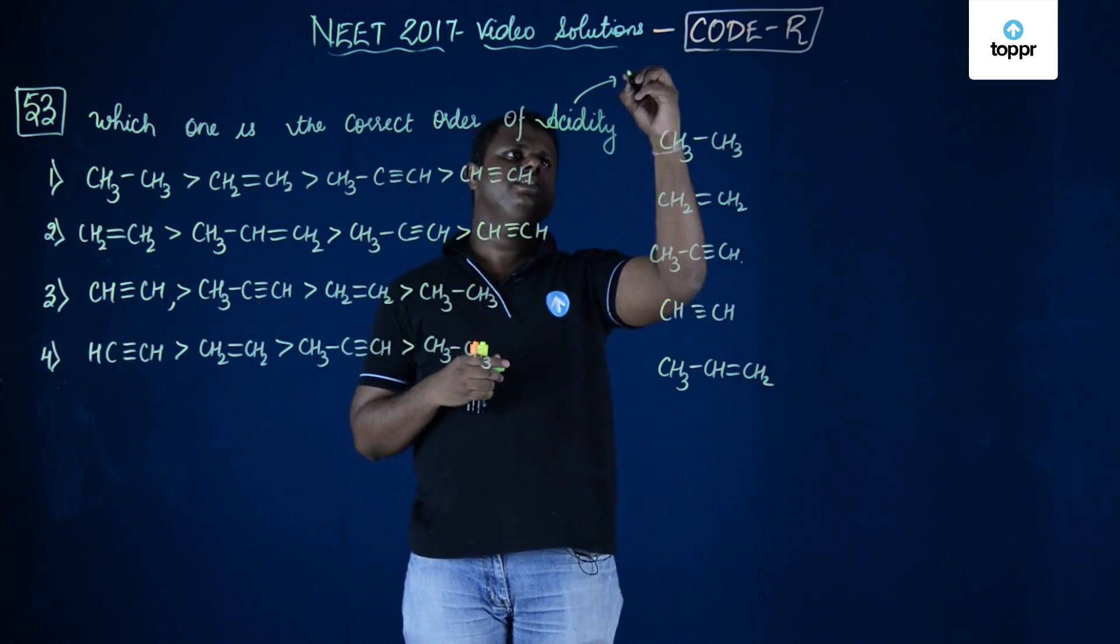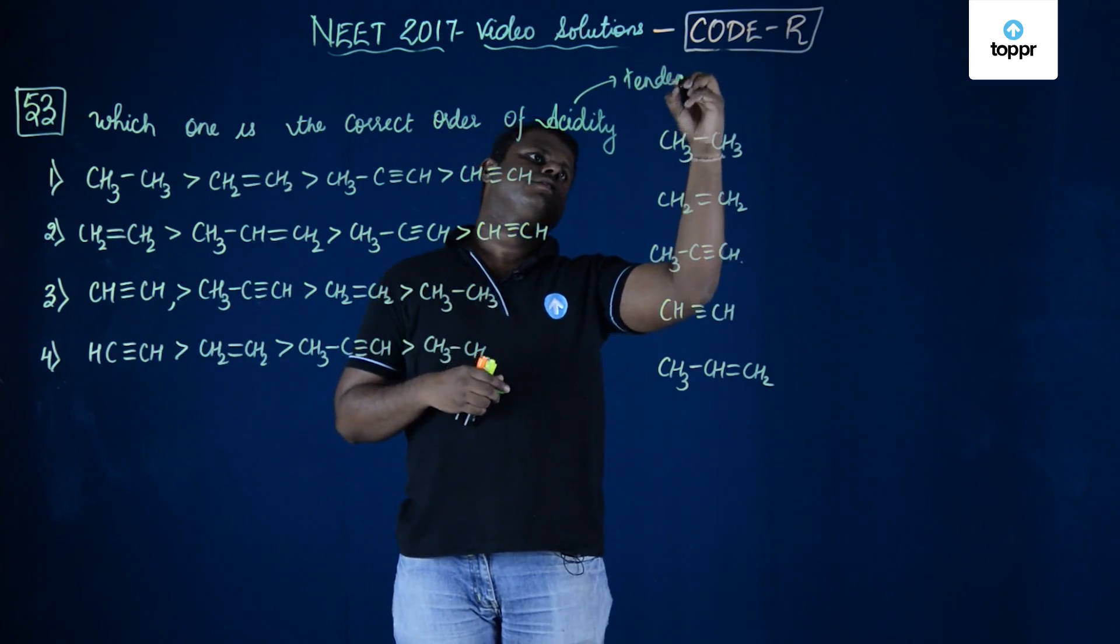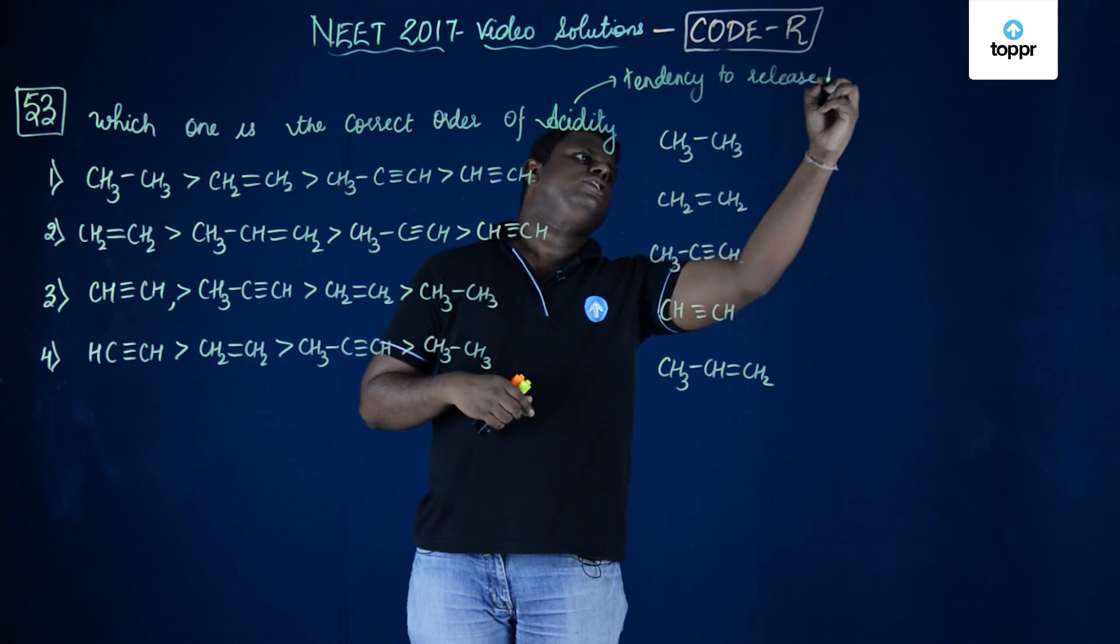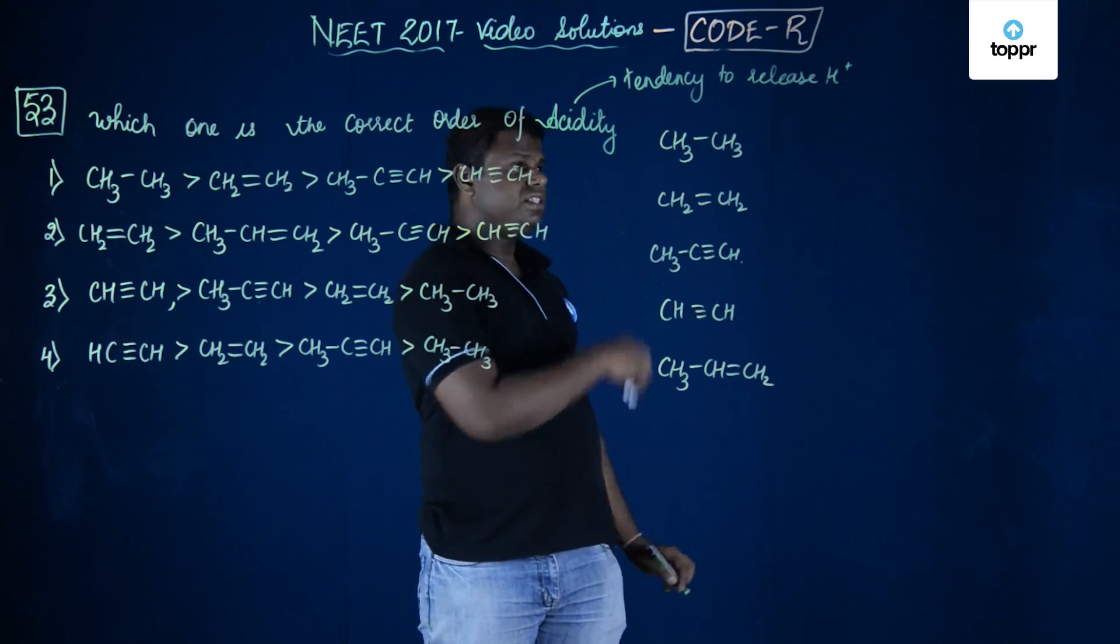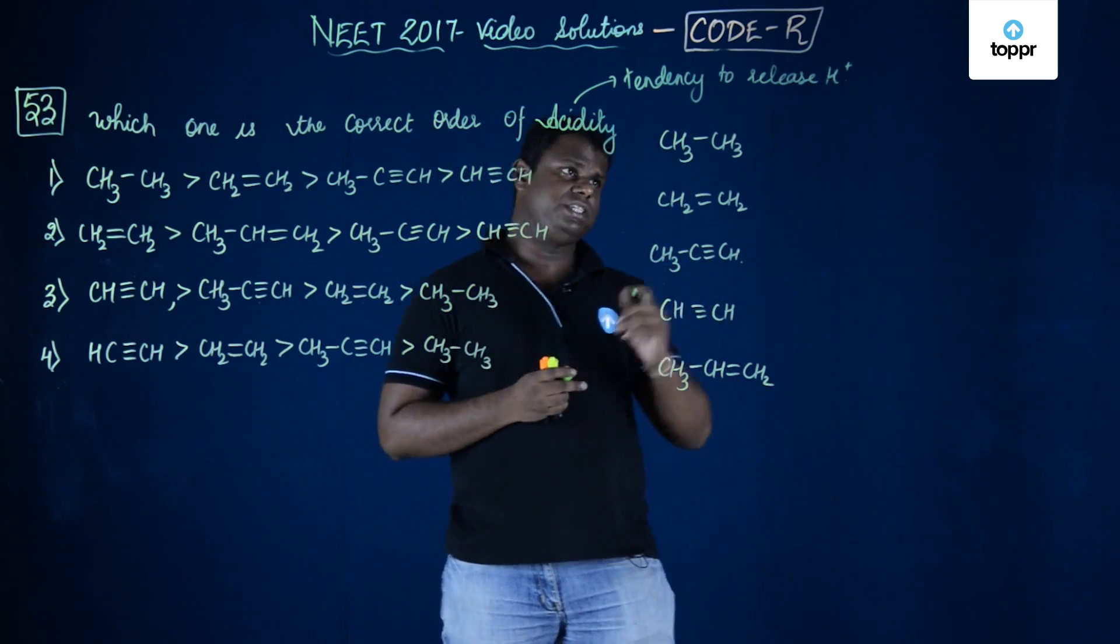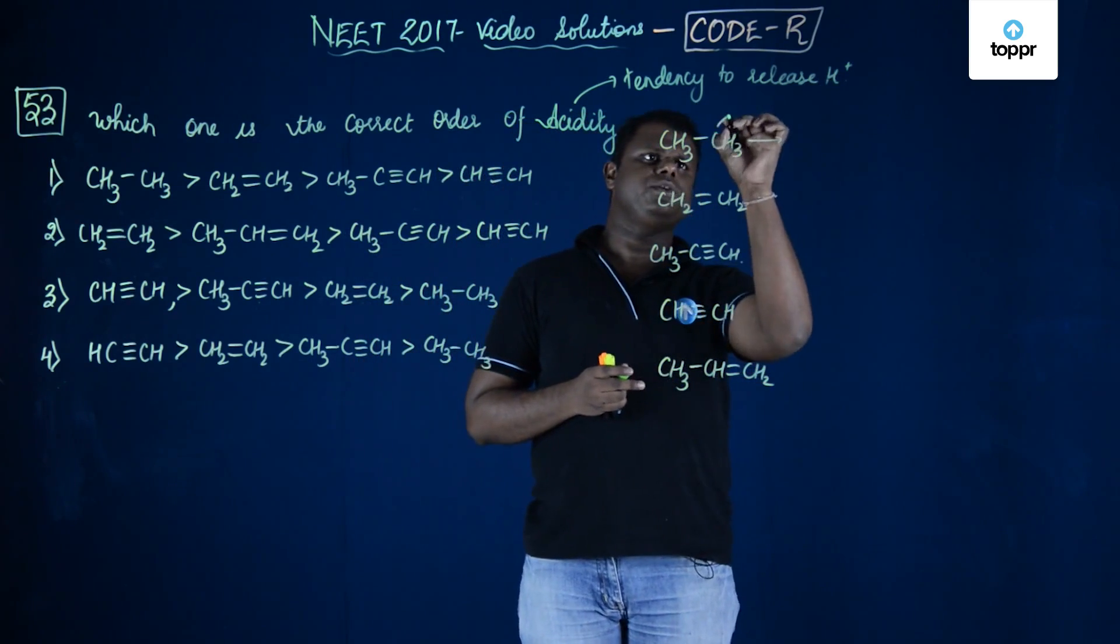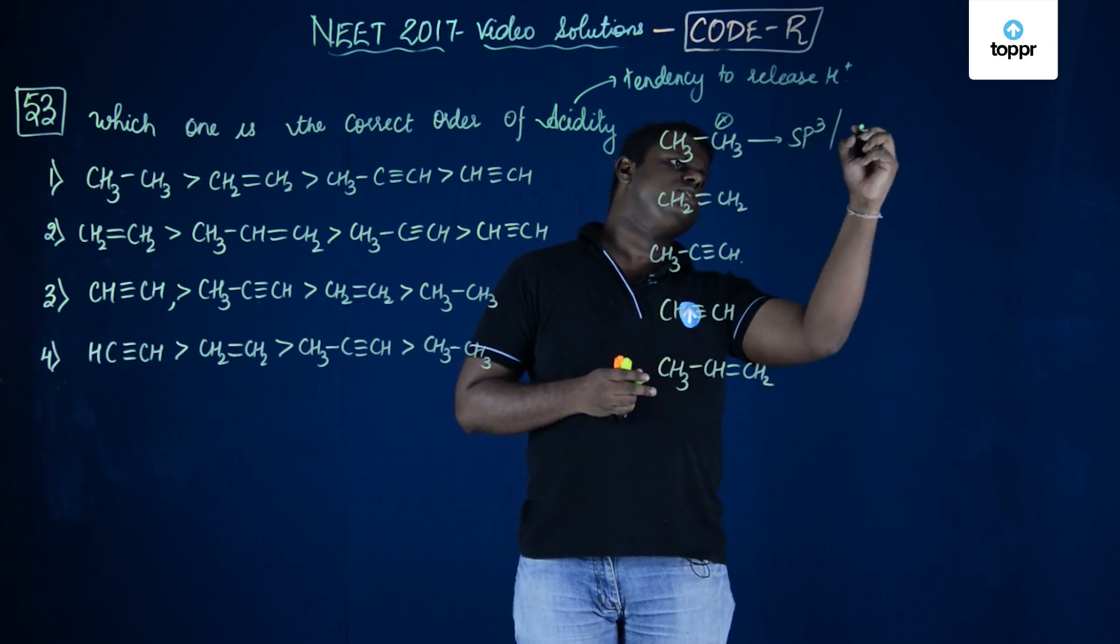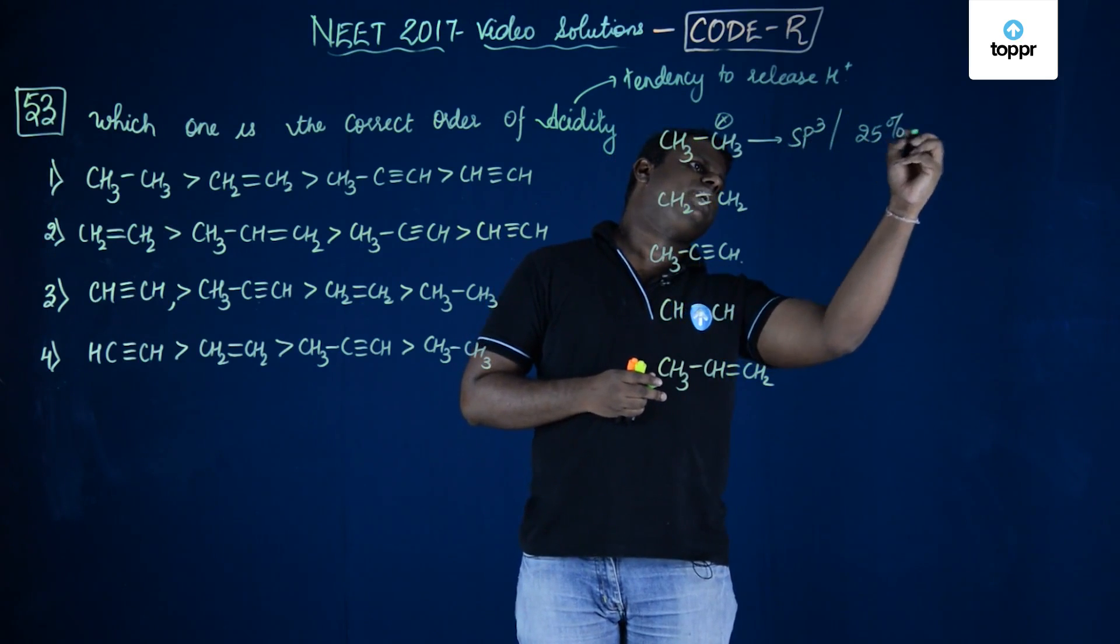Acidity is nothing but the tendency to release H+. The tendency to release the hydrogen as H+ actually depends on the percentage s character. In this case, if you could see this carbon, this is basically SP3 hybridized and this has 25% S character.